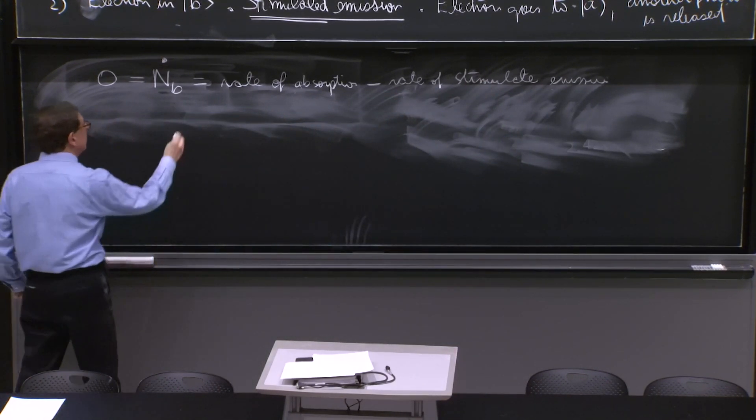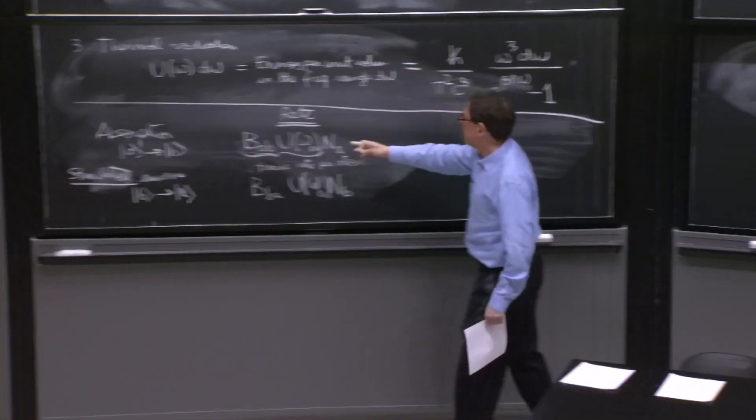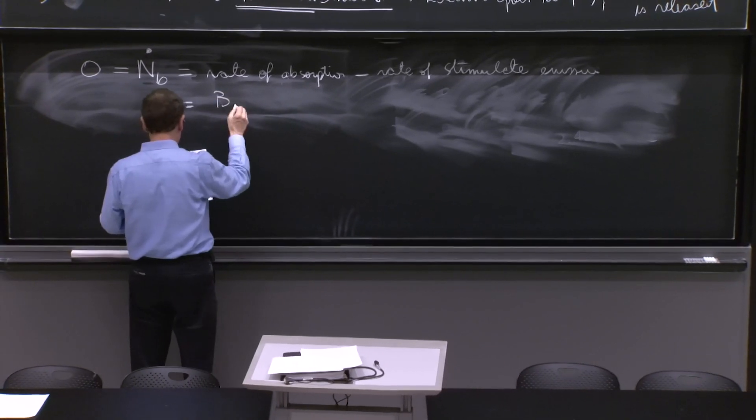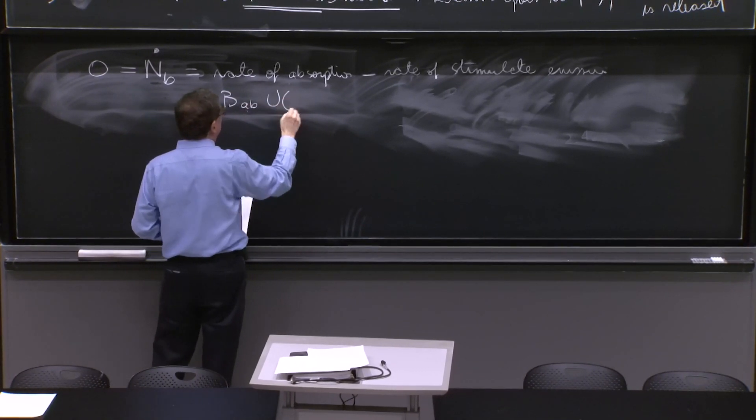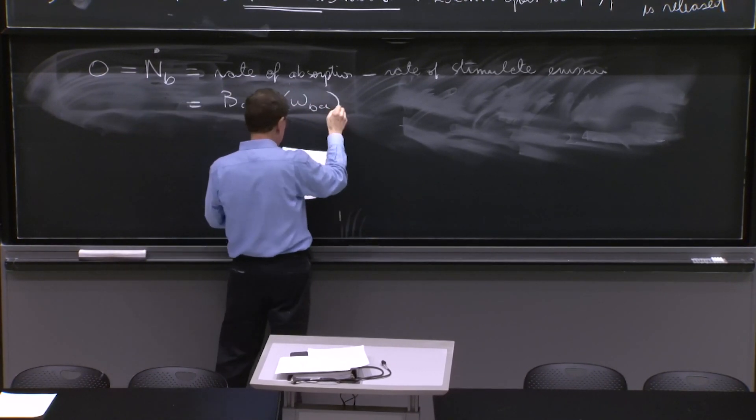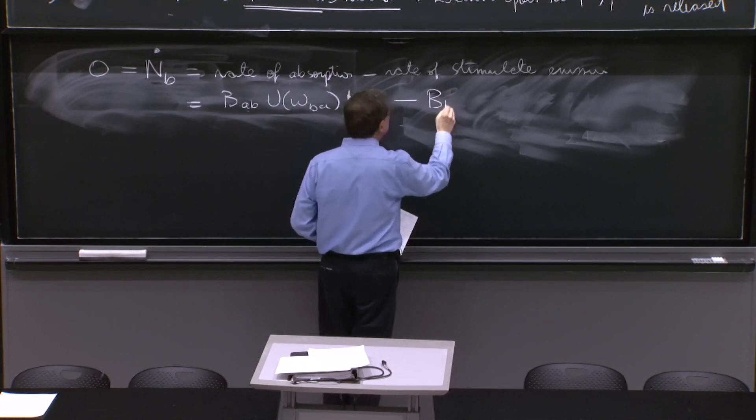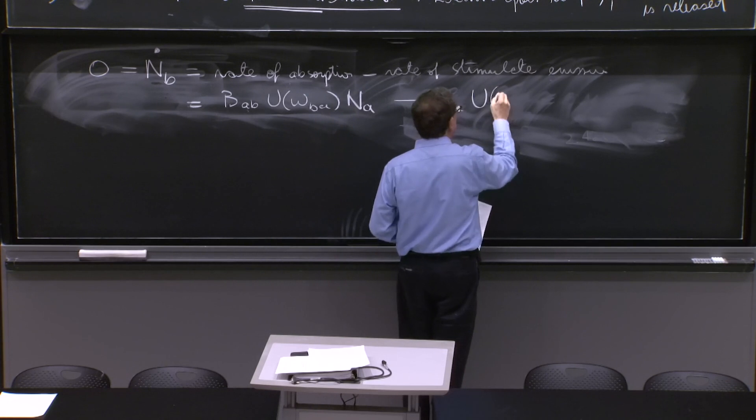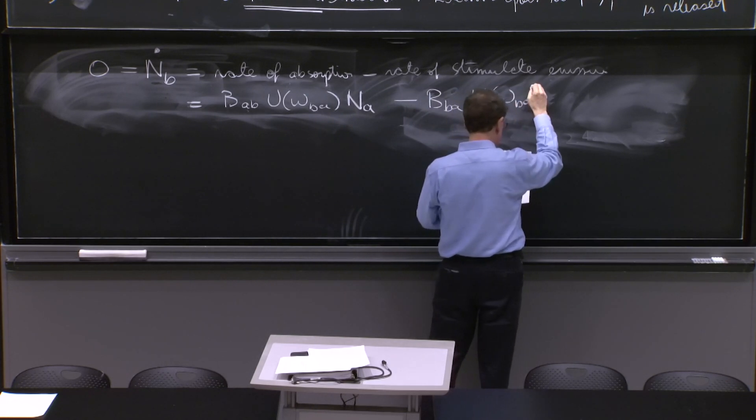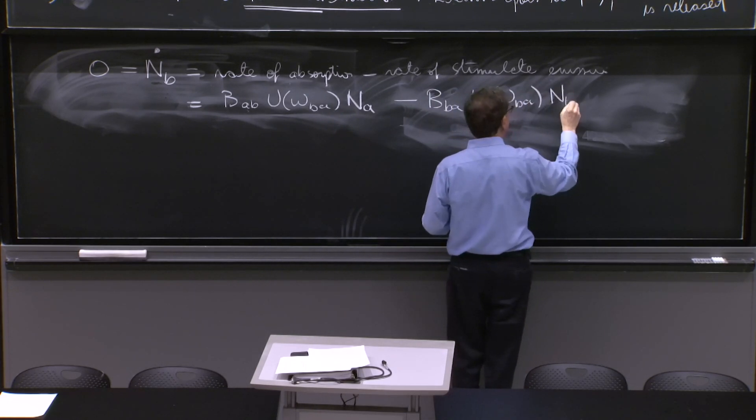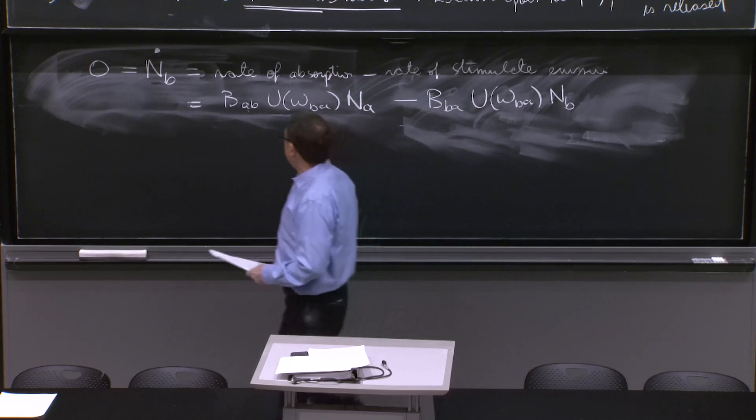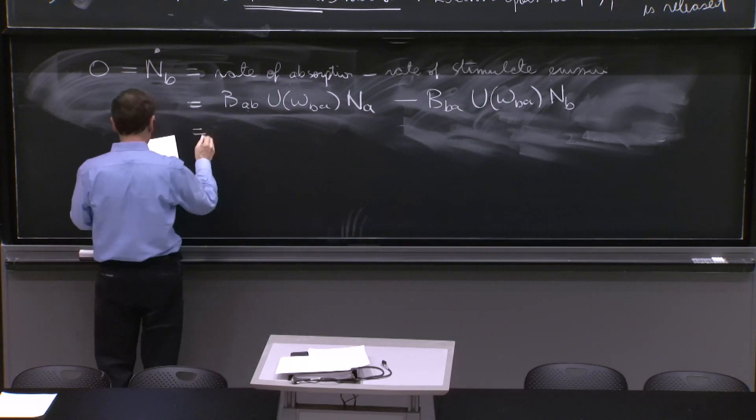So what is the rate of absorption? We have it here. It's this one: BAB U of ωBA NA. And this one is BBA, the same U of ωBA NB. And we can factor the U out.